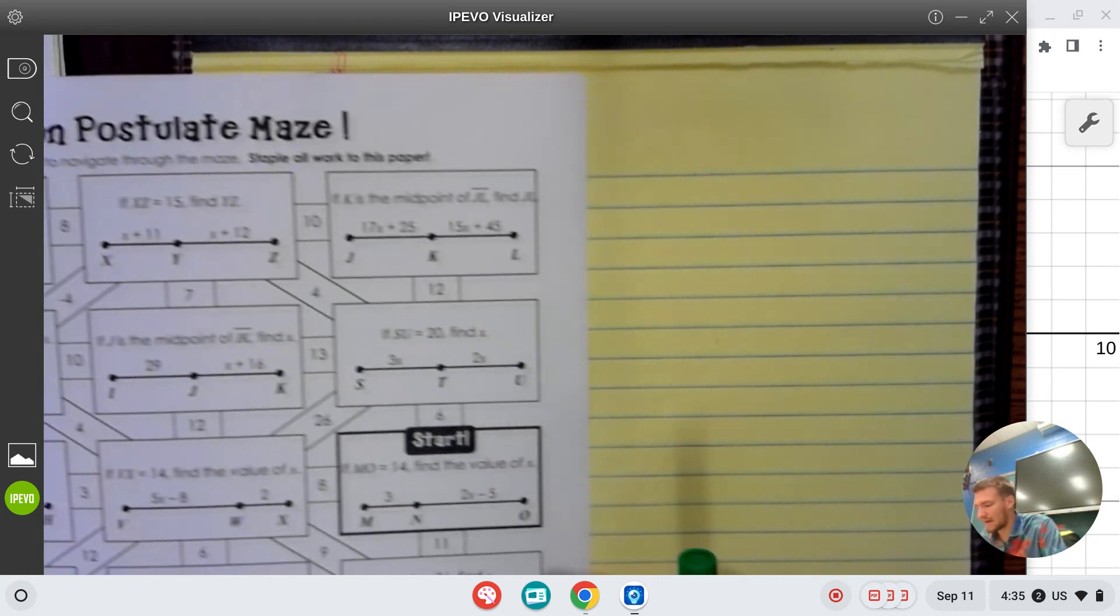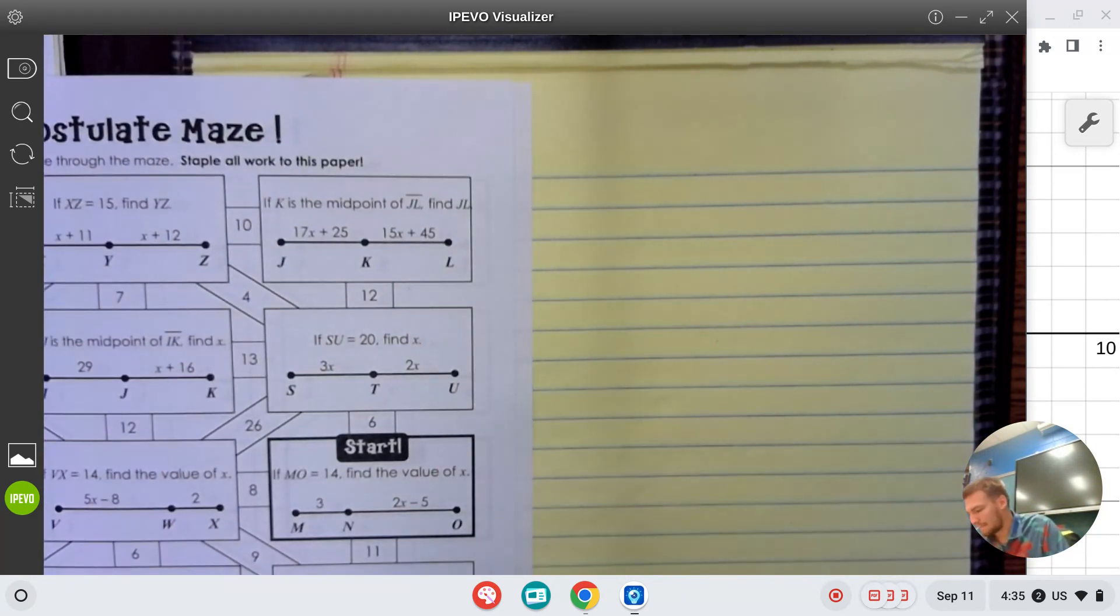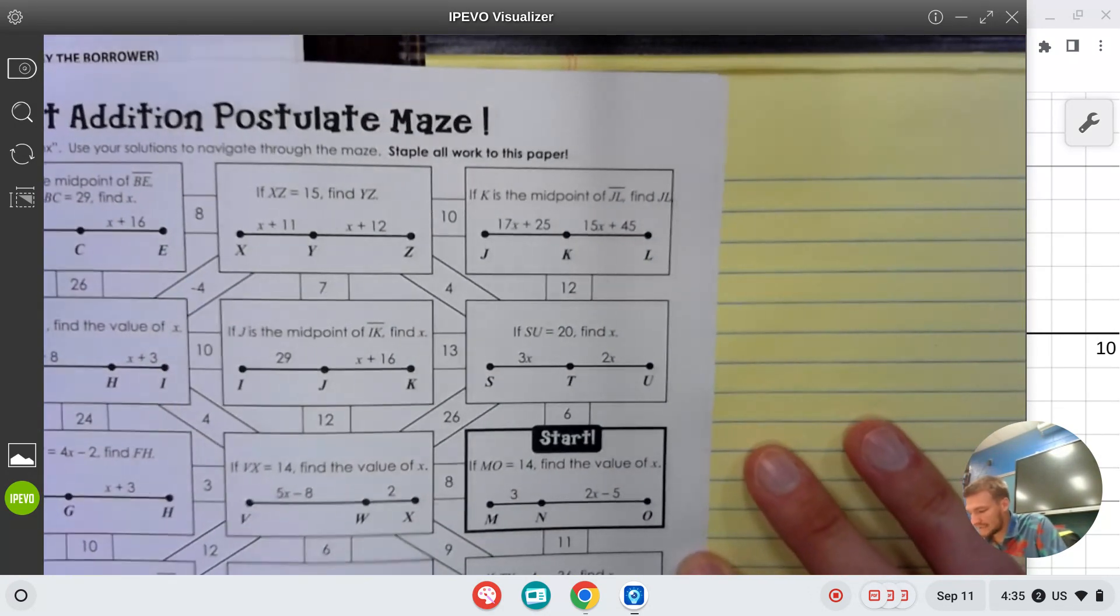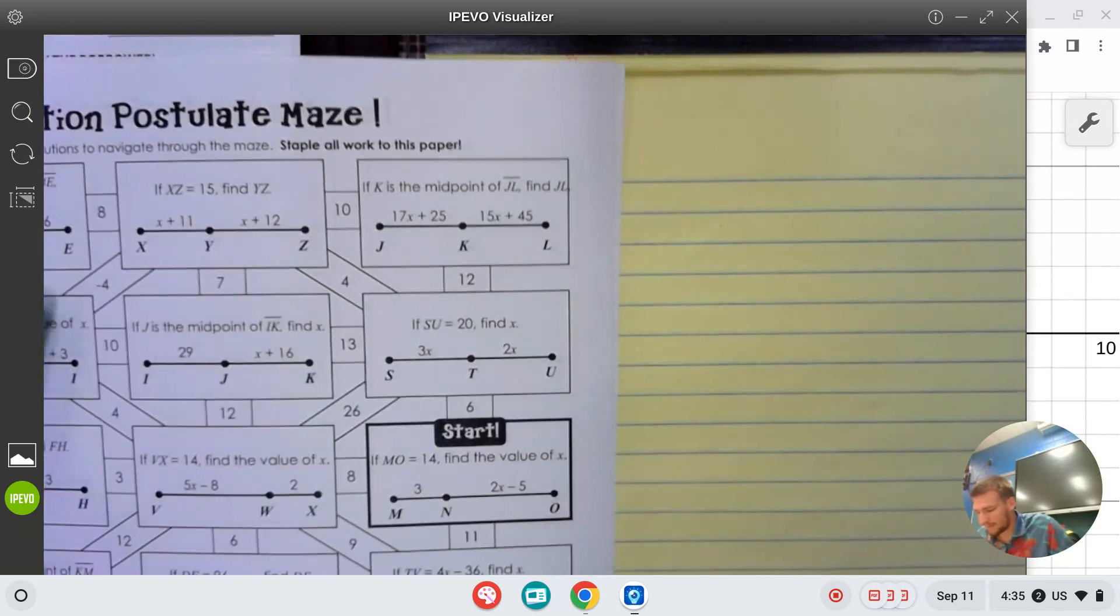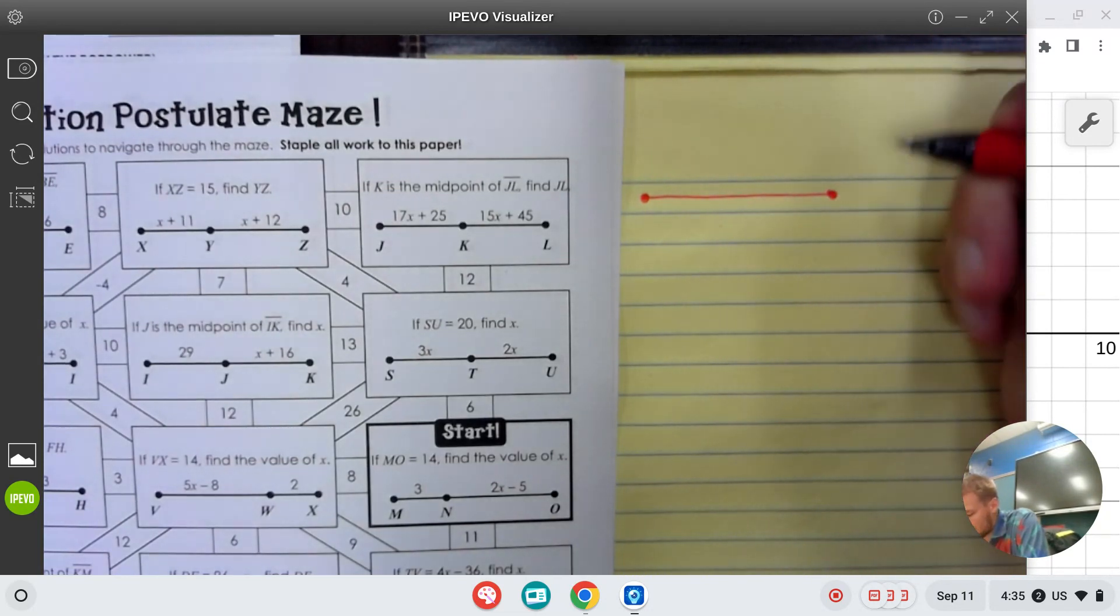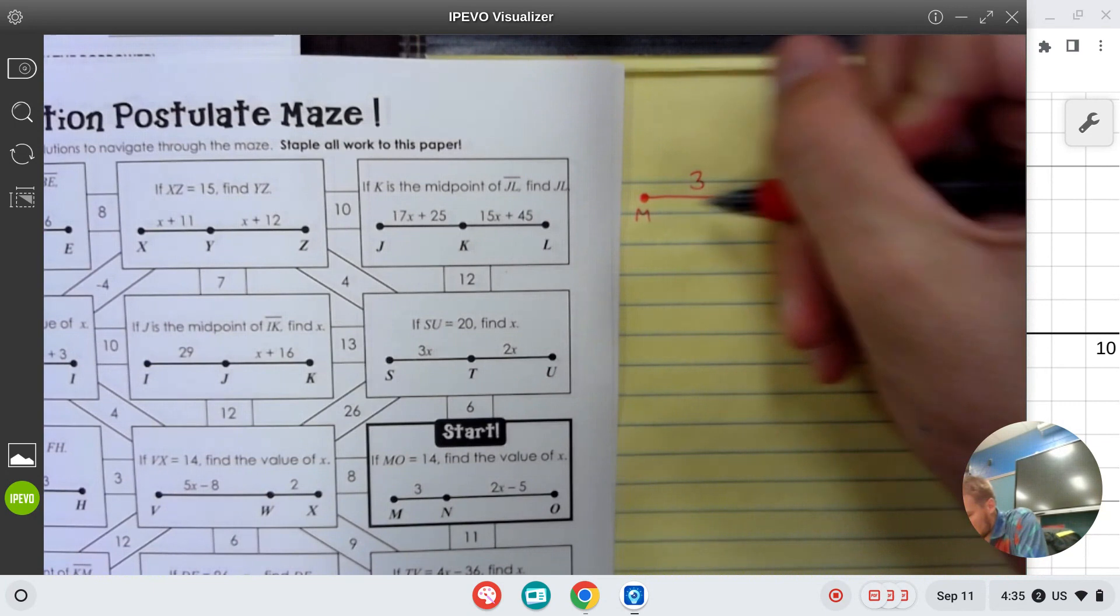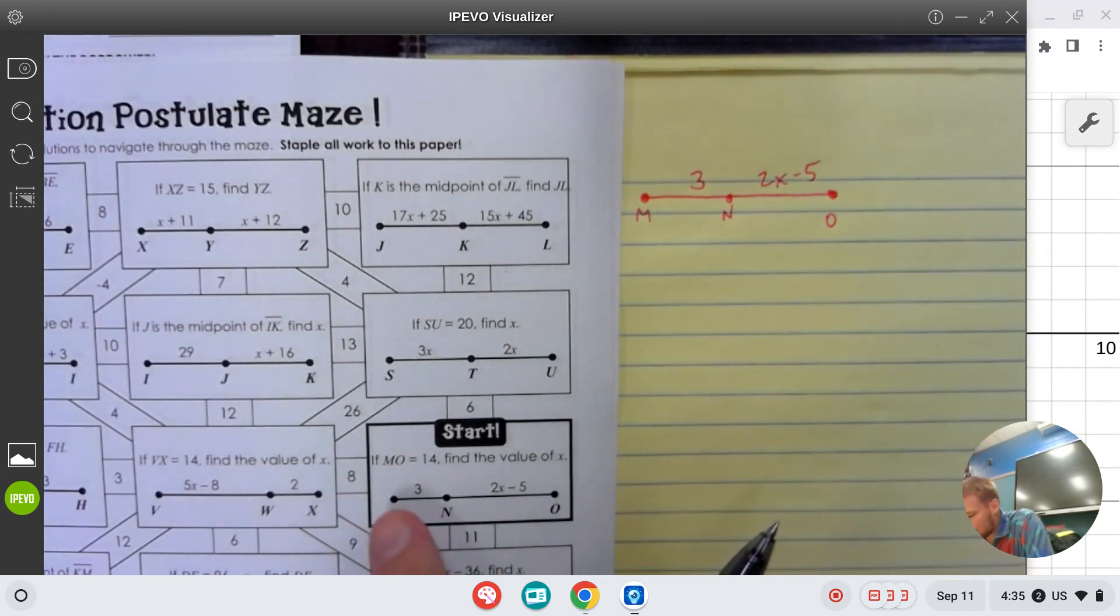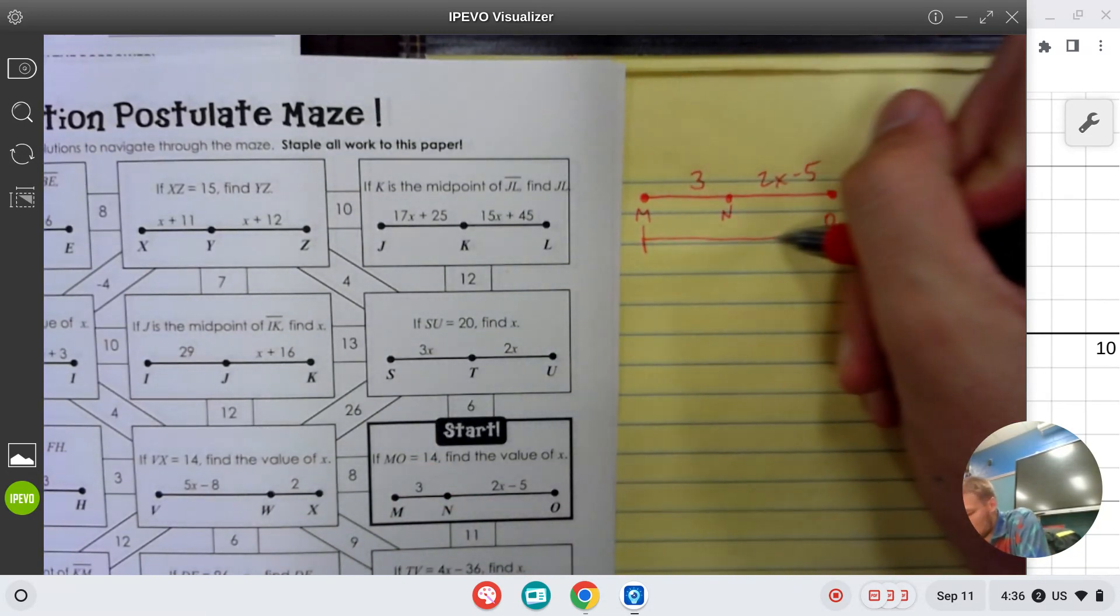The segment addition postulate for the very start question says if MO is 14, find the value of x. We know that MO is the whole thing. Remember, segment addition postulate tells us that the whole thing is equal to the sum of the parts. We got M and O from 2x minus 5, and the whole thing MO is 14.